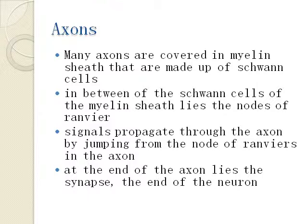The signals propagate through the axon by jumping from node of Ranvier to node of Ranvier, all the way into the synapse. So instead of merely traveling like a communication cable from one spot to another, the signal jumps between nodes, which greatly shortens the travel time from the cell body.